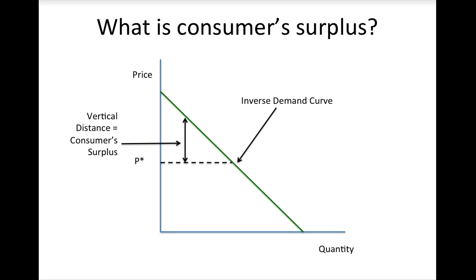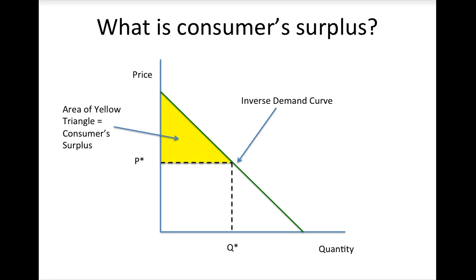Of course, we can add up these vertical distances for each unit of the good that I purchase. The result is that we can calculate consumer surplus by calculating the area of the triangle below the inverse demand curve and above the price. If the price rises, then as a consumer I would be worse off and my consumer surplus would fall. The decrease in my consumer surplus is a measure of how much worse off I am as a result of the price change. We can calculate these changes for individual consumers or for entire markets.